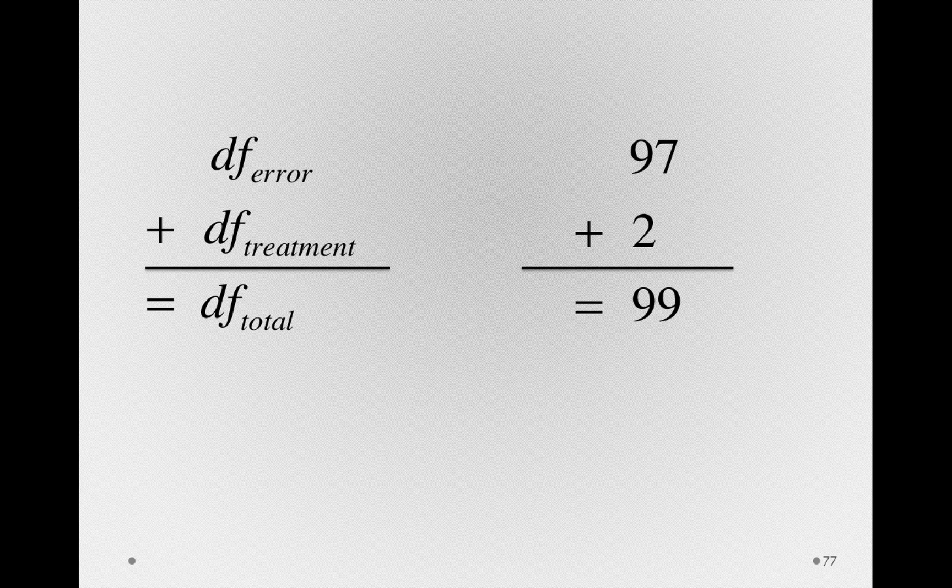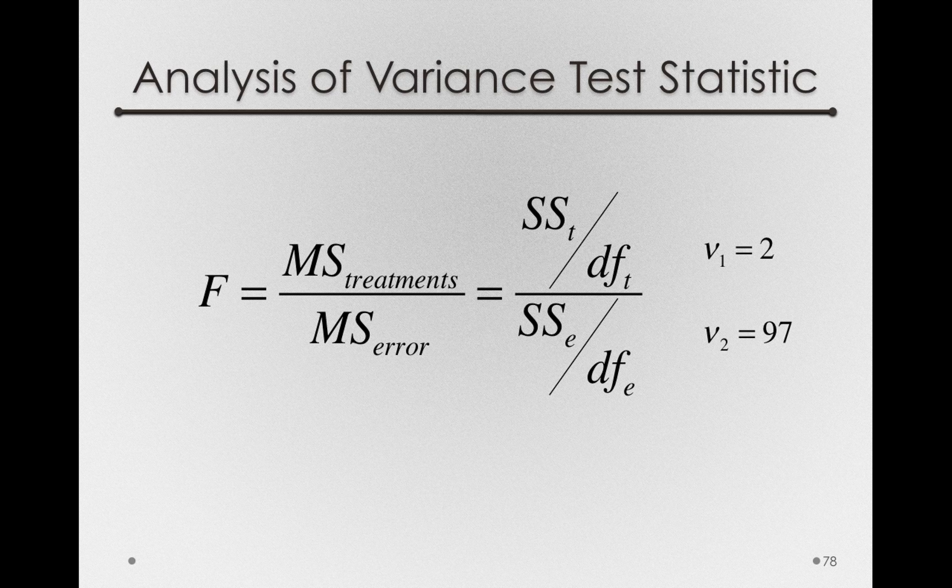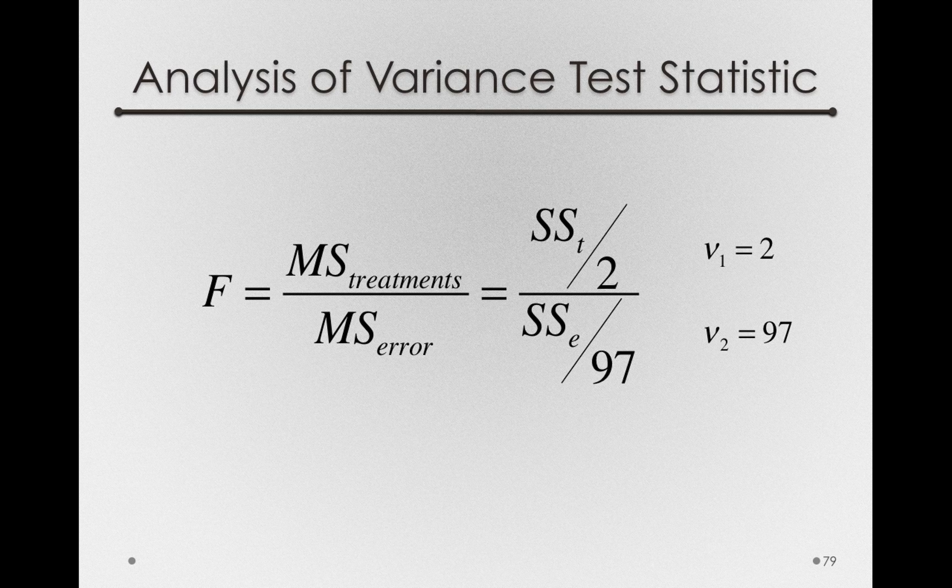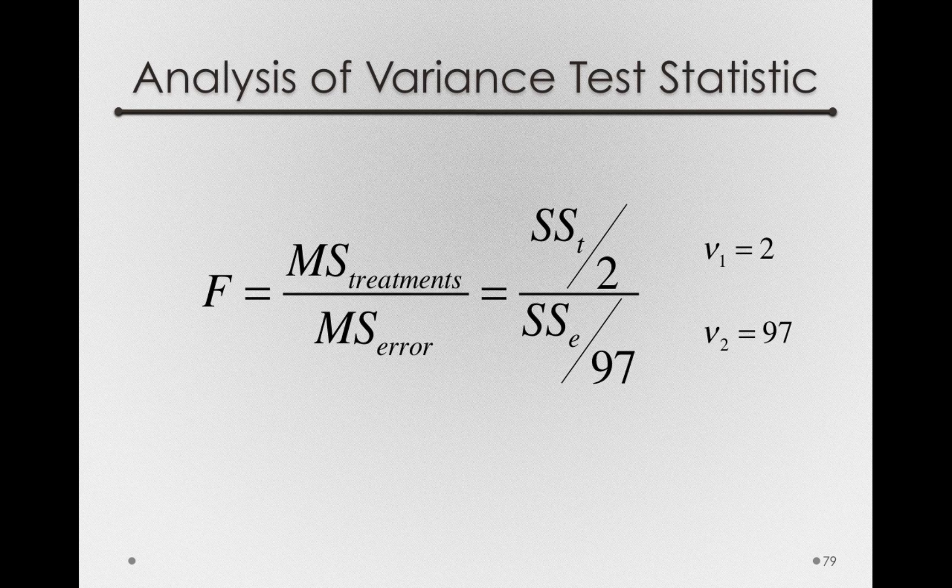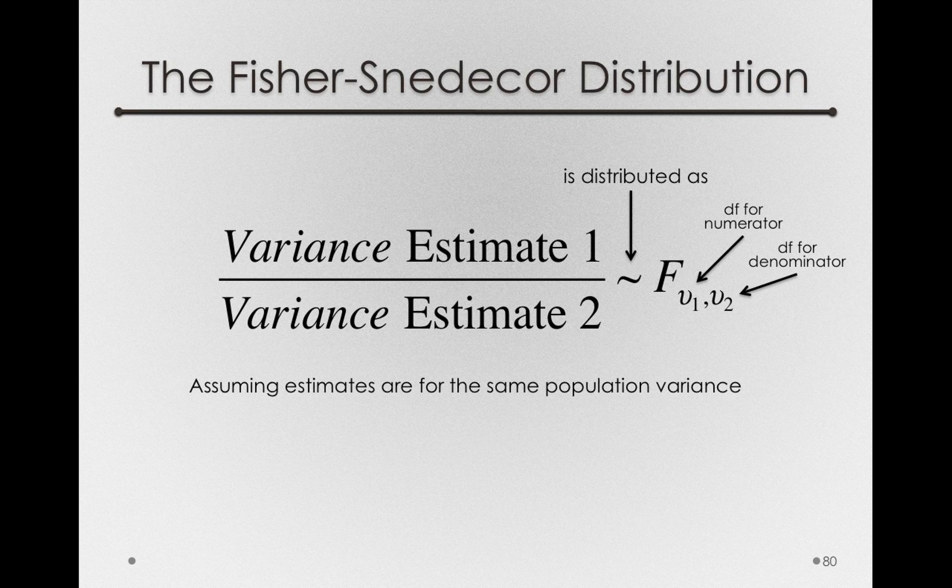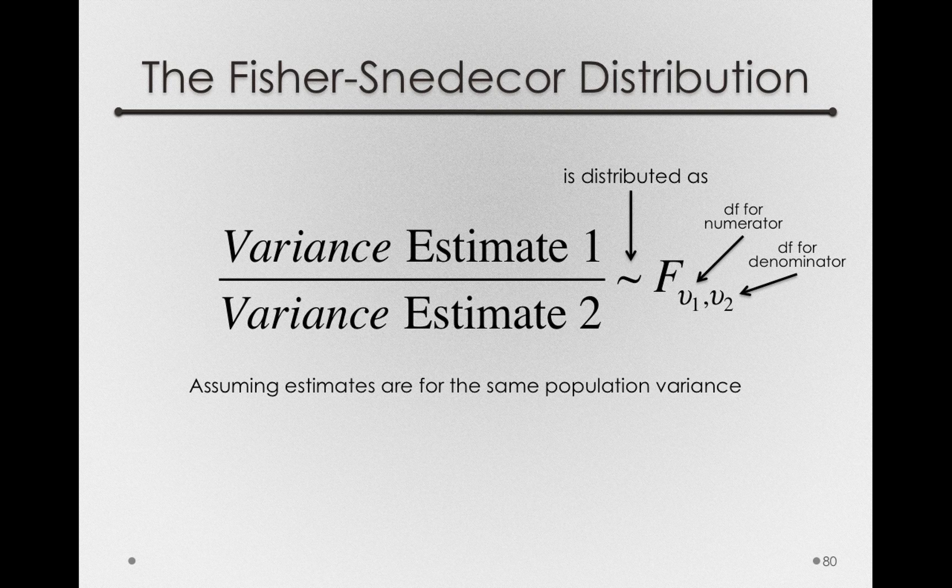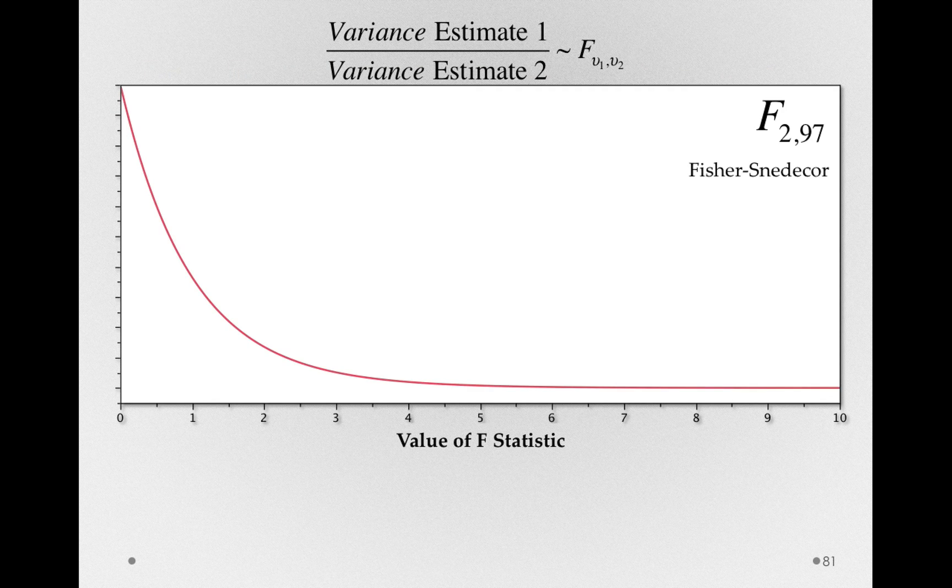And notice what this lets us do now. Now we know what f-statistic we can calculate. We know what f-distribution we're likely to get if the null hypothesis is true. That is, the denominators of our mean squares, the sums of squares for treatment and the sums of squares for error, is what defines that Fischer-Snedecor distribution. Remember, we simply needed the degrees of freedom for the numerator and the degrees of freedom for the denominator in order to draw the Fischer-Snedecor distribution. So that's what we can draw here.